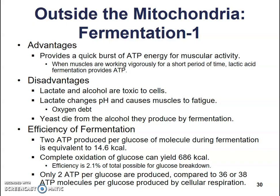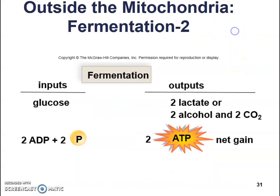The efficiency of fermentation: two ATP produced per glucose molecule during fermentation are equivalent to about 4.6 kilocalories. The complete oxidation of glucose through aerobic respiration inside the mitochondria yields 686 kilocalories. So fermentation is very inefficient — only 2.1% of the total possible energy from glucose. Only two ATP per glucose are produced, versus the 36 or 38 that could be produced through full cellular respiration. Our input is one glucose molecule, two ADP, and two phosphate molecules; by the end we get two lactate or two alcohol and two carbon dioxides, with a net gain of two ATP.